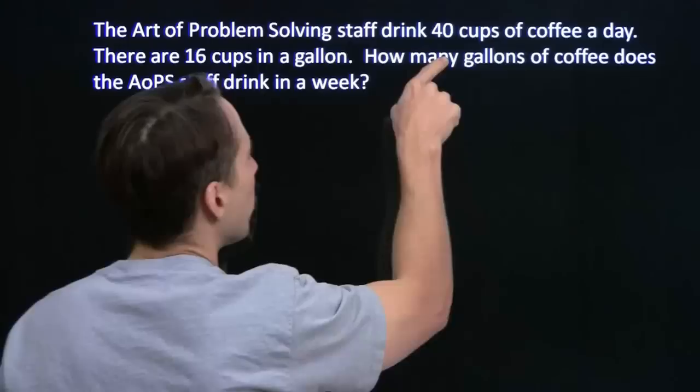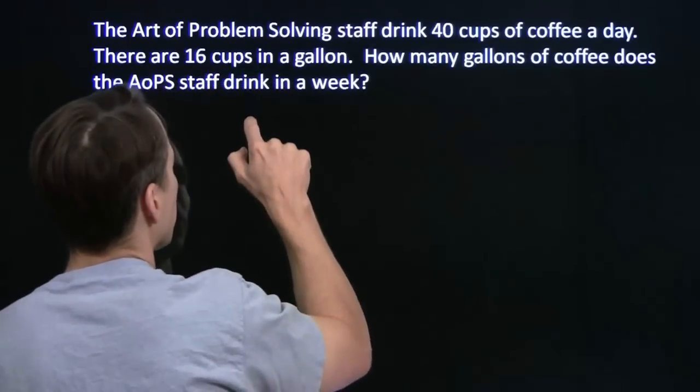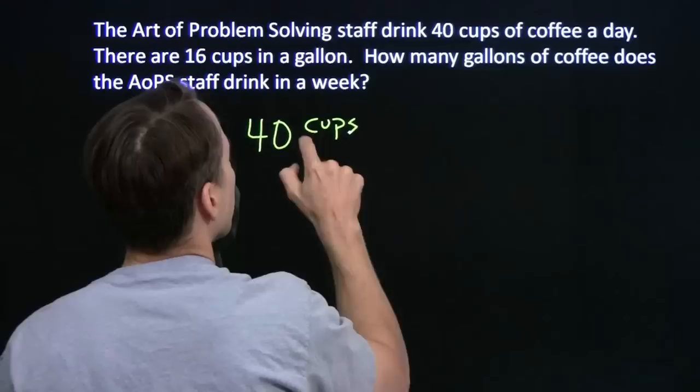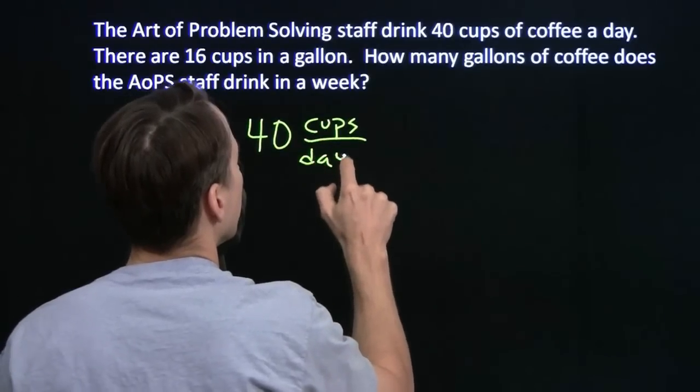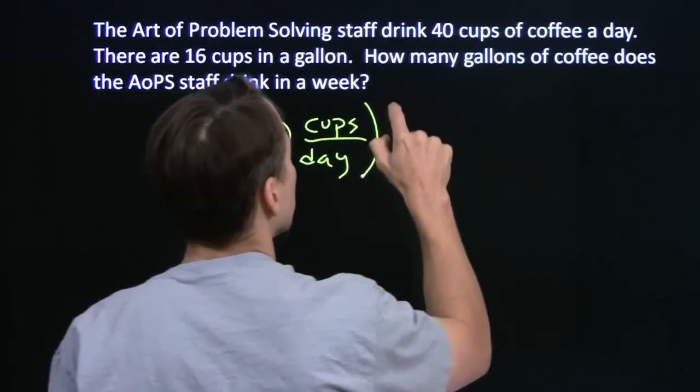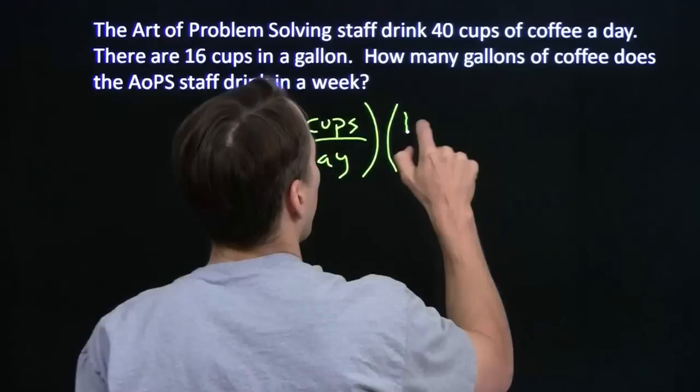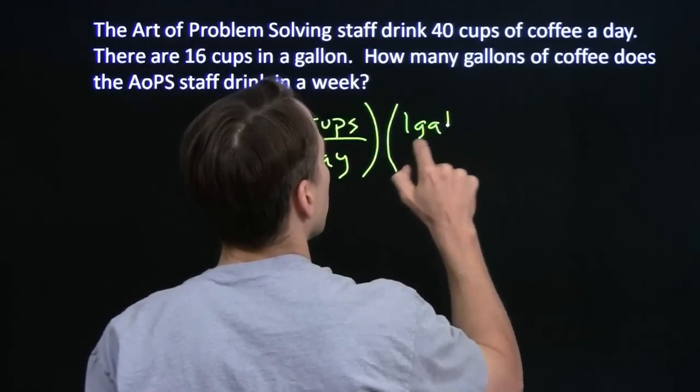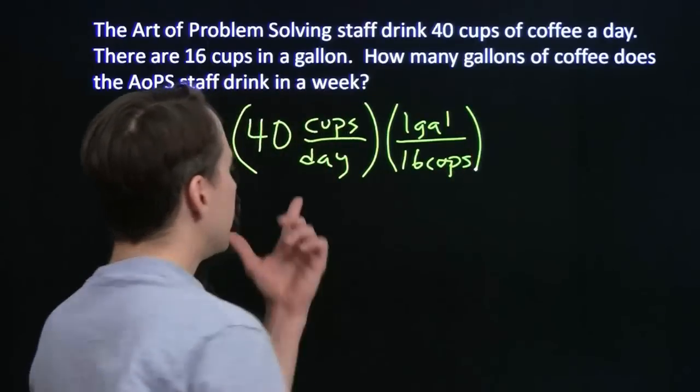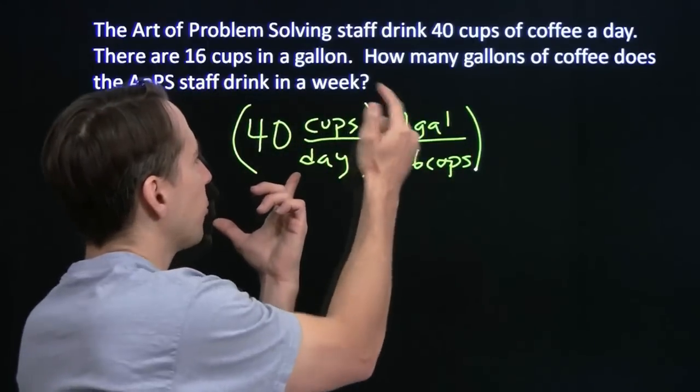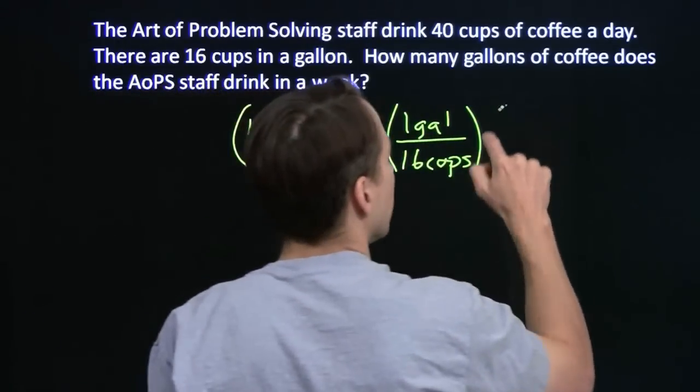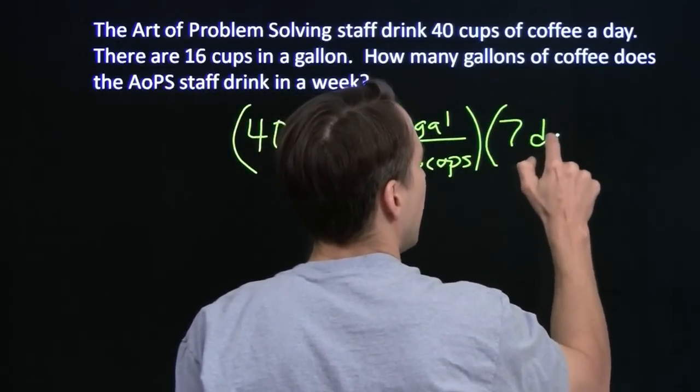Let's check this out. We have 40 cups of coffee per day, so we start with that, 40 cups per day. And then we want to turn the cups into gallons. So we have 1 gallon per 16 cups. And then we need to eliminate the days here. We want to be left with gallons in the end. Our time here is a week is 7 days. So multiply this by 7 days.